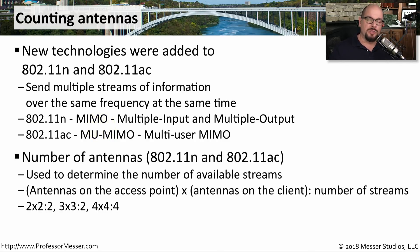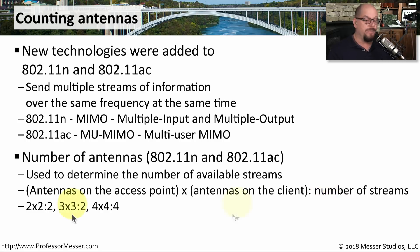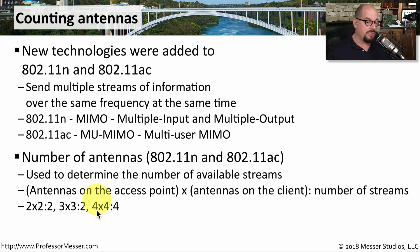The ability to provide multiple input, multiple output is dependent on the number of antennas available on a device. For 802.11n and 802.11ac, you may see the number of antennas on an access point, antennas on a client, and supported streams documented on the device. For example, 2x2:2 means two antennas on the access point, two on the client, and two streams. A 3x3:2 device has three antennas on each side supporting two streams, while high-end equipment may have 4x4:4 supporting four simultaneous streams.